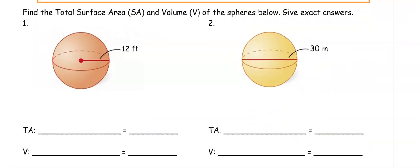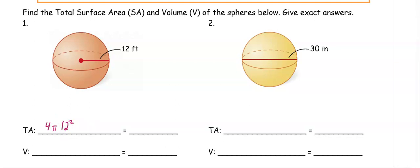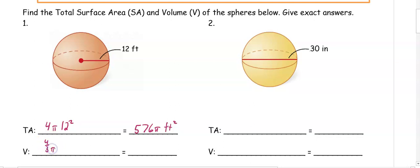In number one, to find our total surface area, we have a radius of 12, so it would be 4π(12²). Doing 12 squared times 4, we get 576π feet squared. For the volume, it is 4/3π(12³), which gives us 2,304π feet cubed.